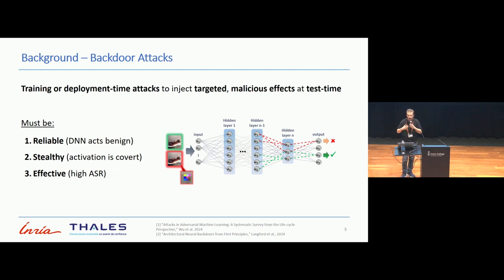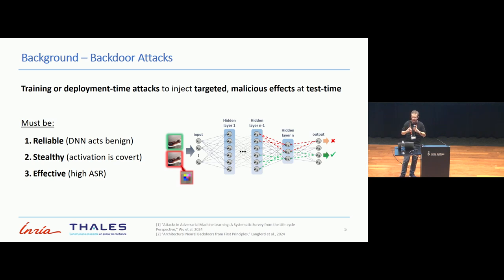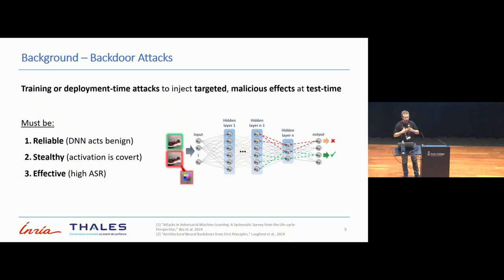So what is a backdoor? A backdoor is a training or deployment-time attack whose role is to inject into a model some wrong, erroneous behavior that can be activated at test time. This behavior, which is malicious, needs to be reliable in the sense that the model must appear completely benign from the perspective of a victim. Of course, that backdoor must be stealthy — it must avoid detection at any point before an attacker can use it. So the activation must be covert. And finally, because we are talking about an attack, it needs to be effective, having a high attack success rate or ASR.